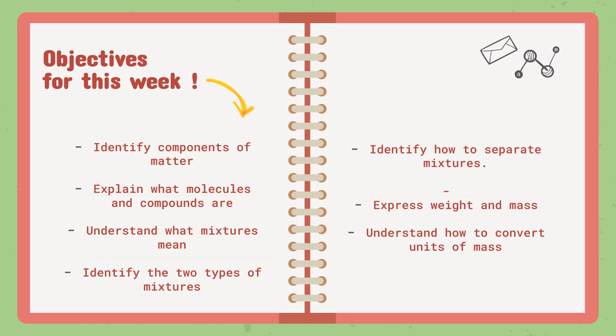With this, we finish the objectives of the first lesson, which is describing and classifying matter. Moving on to the second lesson that we will be starting at the end of the week, which is measuring matter. We will just take a few pages from it. We will start by expressing weight and mass — what does weight mean, what does mass mean, how do they compare, and how we can convert units of mass.